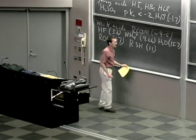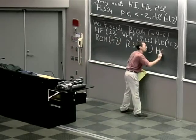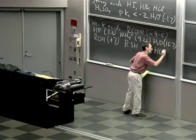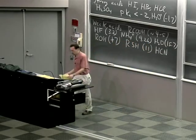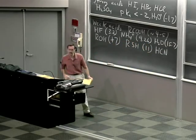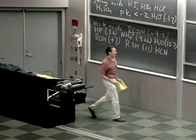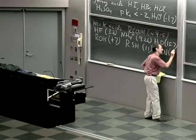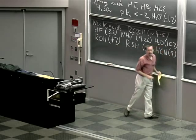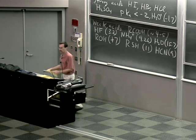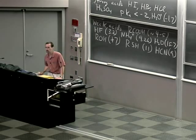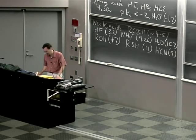The last example I'll give in this category: hydrogen cyanide. The pKa of hydrogen cyanide is about 9. Hydrogen cyanide is sometimes referred to as hydrocyanic acid. It's an incredibly toxic compound — 50 milligrams will kill you.